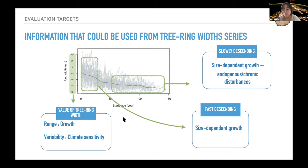First, I'd like to show the information that could be isolated from tree ring width. First, the tree ring volume itself. The range of values can give information about growth of trees, and the variability of the values can provide information about climate sensitivities of the trees.